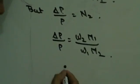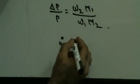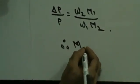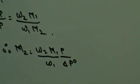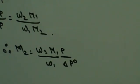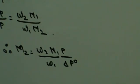Since the relative lowering of vapor pressure equals the mole fraction of the solute, we get: delta P upon P0 equals W2 M1 upon W1 M2. From this, I can find out the molecular weight of the solute using the formula: M2 equals W2 M1 P0 upon W1 delta P. This equation can be used to calculate the molecular weight of a solute, provided the vapor pressure of the solvent is known.